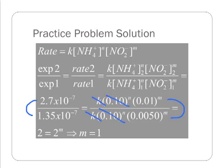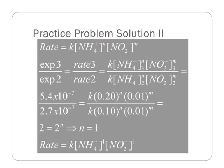Both, again, raised to the power of M. All right, so two equals two to the M implies then that M is going to be one. Then to find the order with respect to the cation, we set up the ratio between experiment three and two. Plug in the data for the rates. Plug in all the data here for the concentrations of the ammonium cation and the NO2 minus.